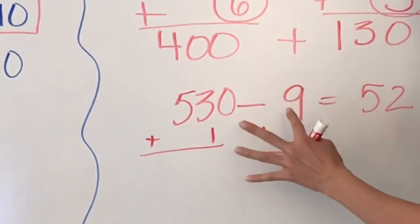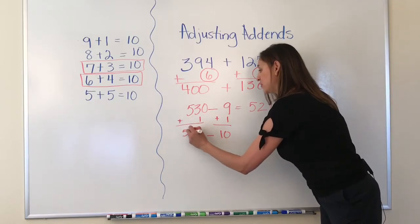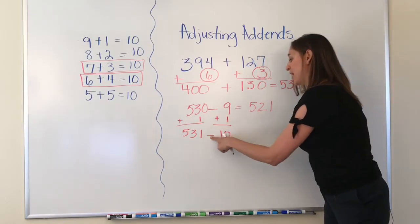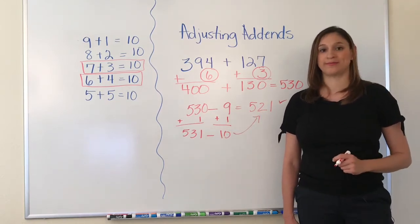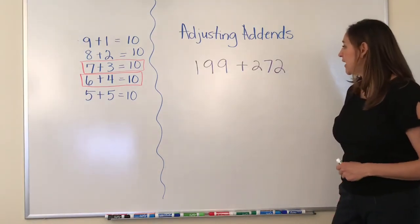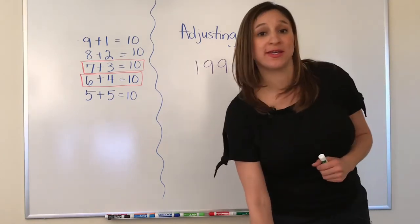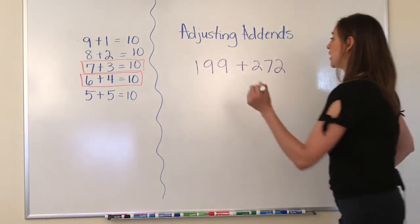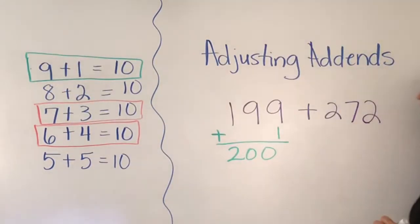If you are having trouble subtracting 9 from 530, you can always add 1 on both sides. Now you have 531 minus 10 is 521. Next, I will add 199 plus 272 by adjusting both addends. As you can see, knowing your math facts will help you streamline this process.